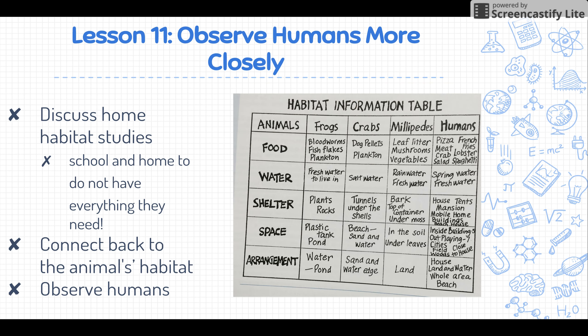Lesson 11 is where students observe humans more closely. They keep a habitat about human observations at home and how they interact with their habitat, and also make observations about humans at school. We did this at the beginning of the unit, so you can make connections back to that, and then connect to how the animals interact with their habitat. You'll add this information to the habitat information table.